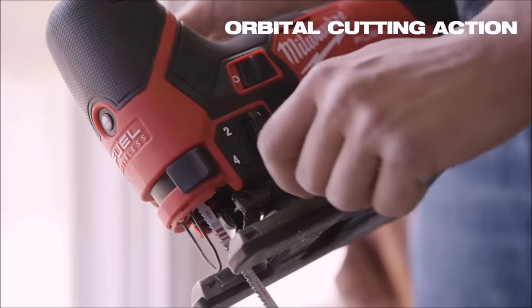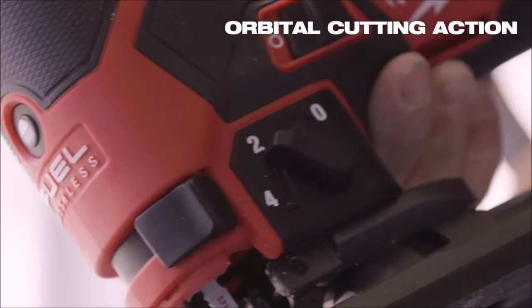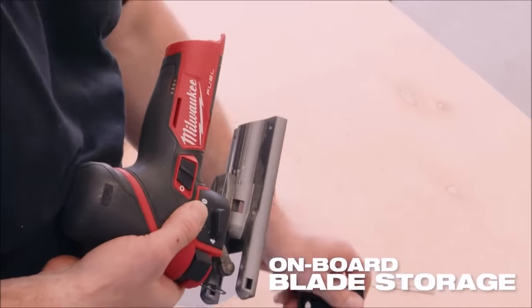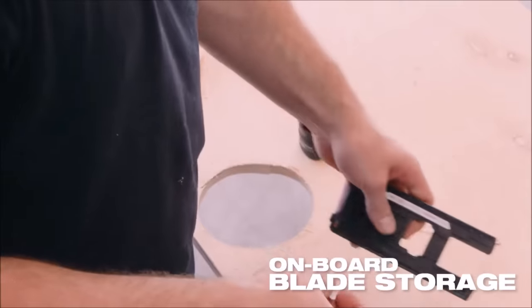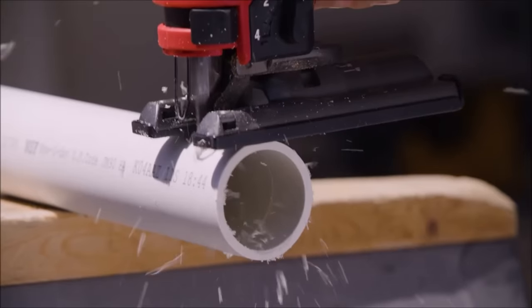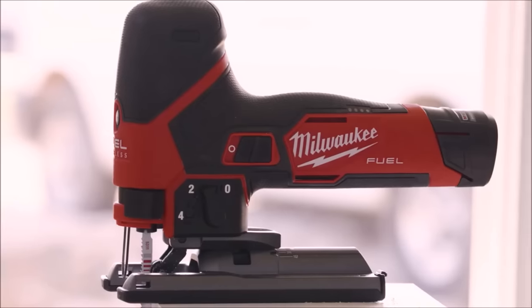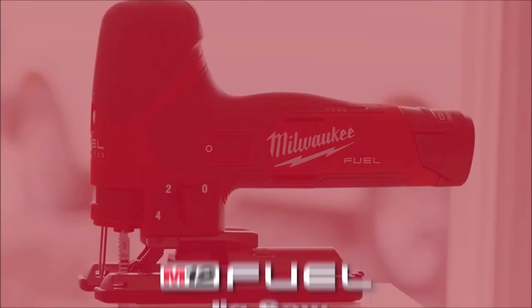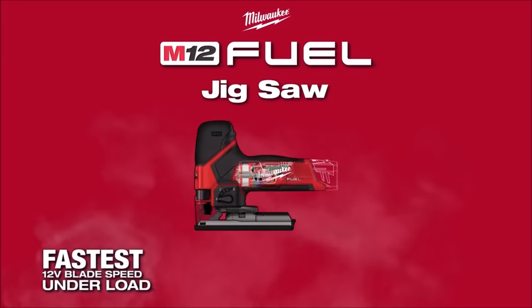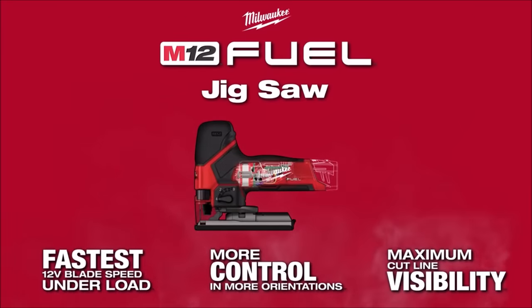Its ergonomic barrel grip design, low vibration, and adaptability to various orientations offer unmatched control. Enhanced visibility is a hallmark, thanks to the on-off LED light and dust blower, optimizing cut-line visibility. With orbital action, variable speed, tool-less blade change, and blade storage, the M12 Fuel Jig Saw is a versatile and efficient choice for professionals seeking excellence in every cut.